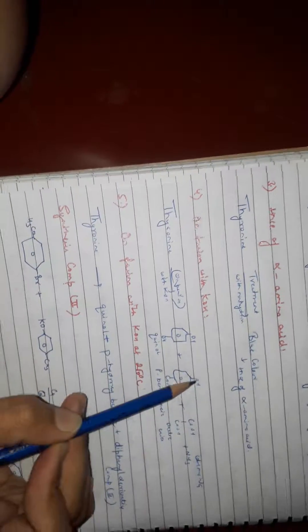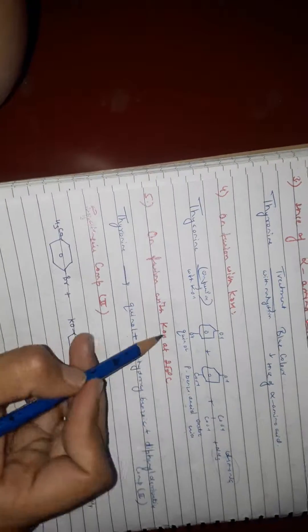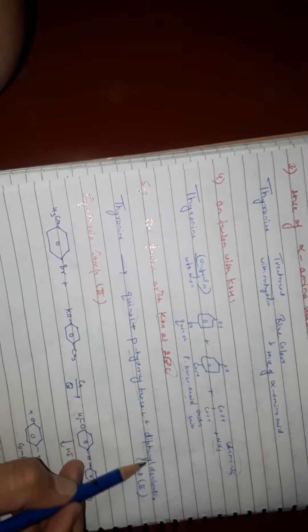On fusion with KOH, thyronine gives quinol, para-hydroxybenzoic acid, oxalic acid, and ammonia. On fusion with KOH at 250 degrees Celsius, it gives quinol, para-hydroxybenzoic acid, and diphenyl derivative compound seconds.